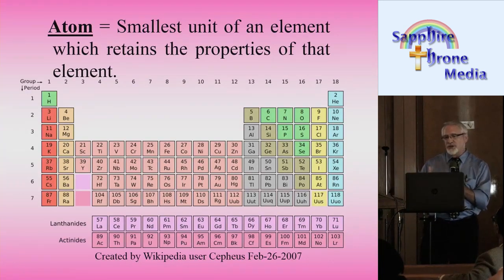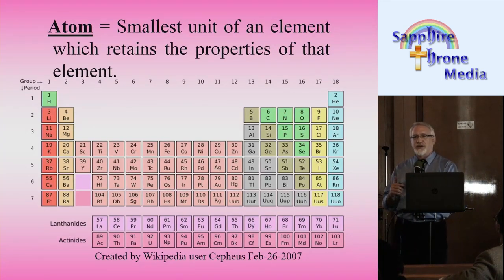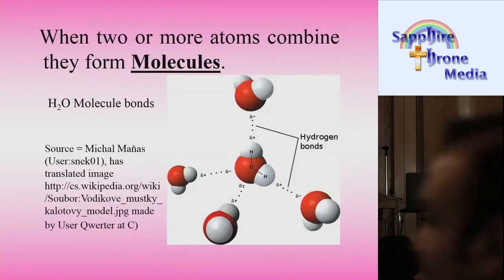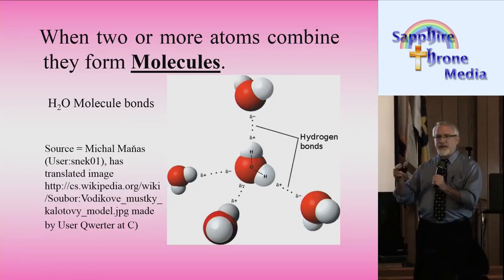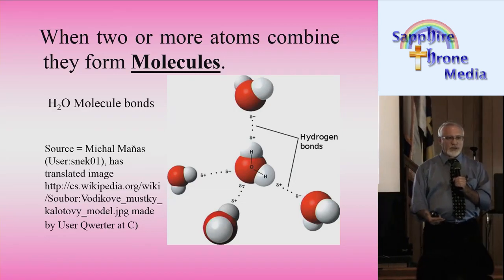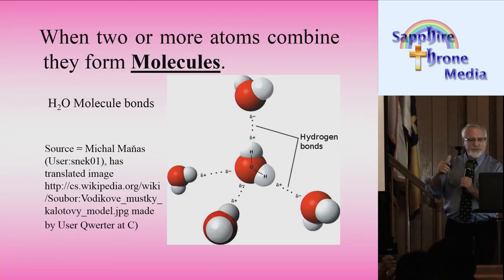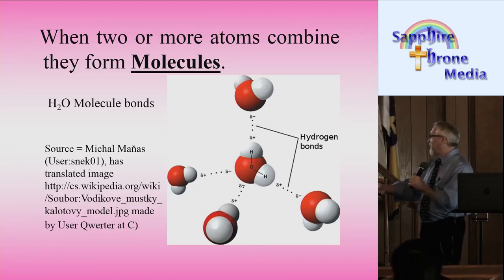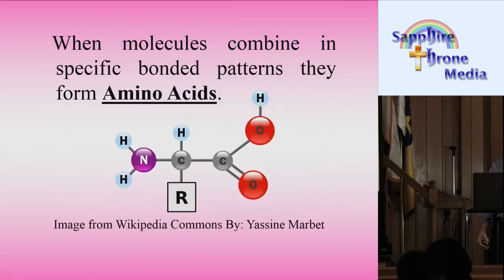An atom is the smallest unit of an element which retains the properties of that element. Here on the screen you see an image of the periodic chart. When two or more atoms combine, they form molecules. So atoms are the smallest particle that retains the element's properties. Two atoms or more combine to form molecules — here you have the H2O molecule demonstrated with its bonds.